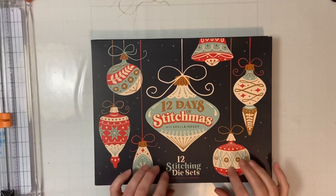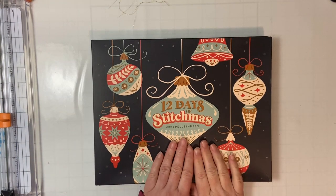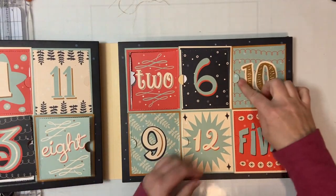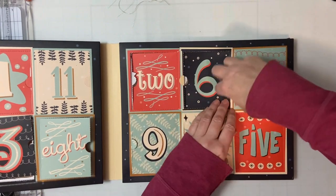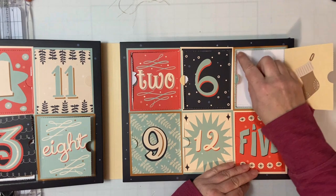Hey everyone, Alison here from Ladner Village Arts and Crafts and we are up to day number 10 on the 12 days of Stitchmas. So let's see what is behind window number 10. It is a stocking.